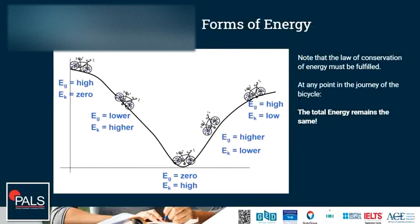Let's have a look at this example. A bicycle starts at the top of a hill, where it has high gravitational potential energy and zero kinetic energy. As it runs down the hill, its gravitational potential energy gets lower since its height relative to earth's surface decreases and it speeds up. Gravitational potential energy changes to kinetic energy.